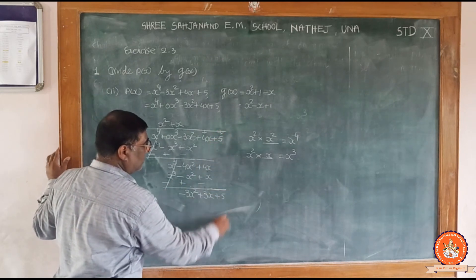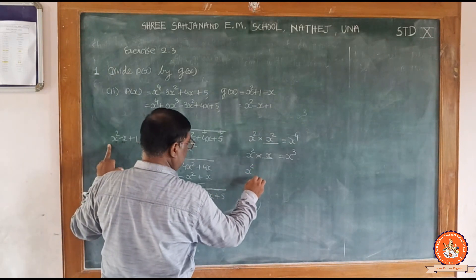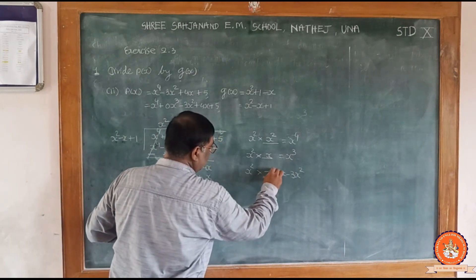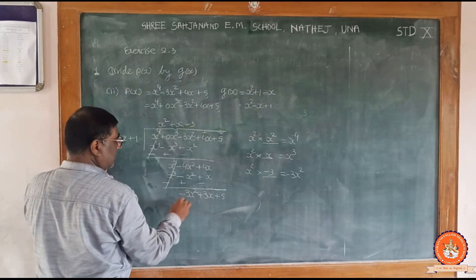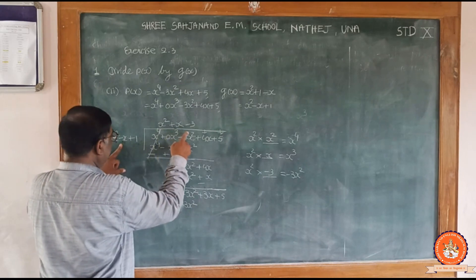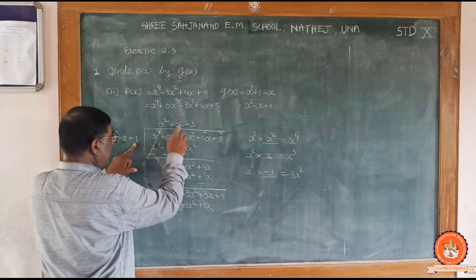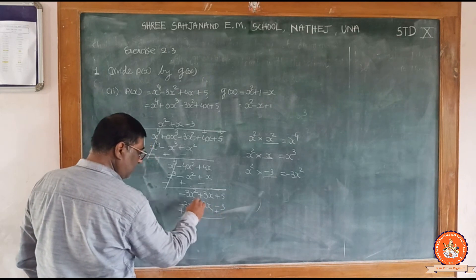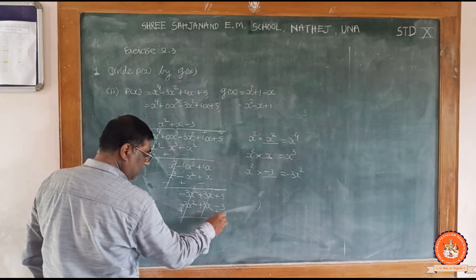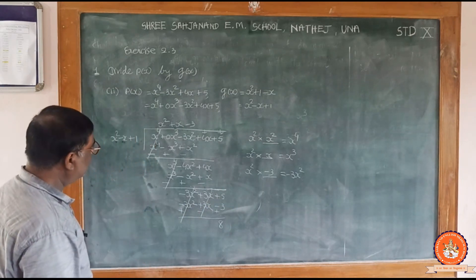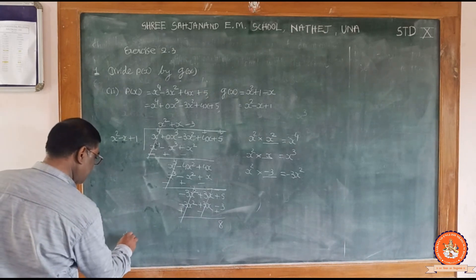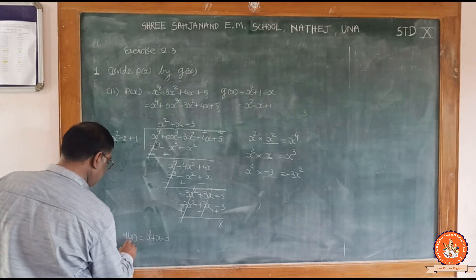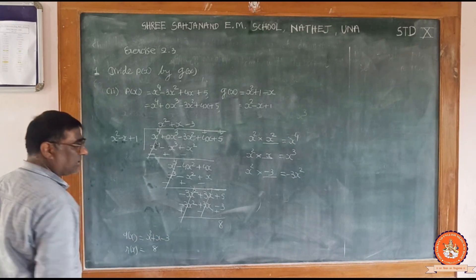Drop down plus 5. Now x square times minus 3 gives minus 3x square, minus x times minus 3 gives plus 3x, and 1 times minus 3 gives minus 3. Change signs: the x square terms cancel, the x terms cancel, and 5 plus 3 gives 8. So the quotient Q(x) equals x square plus x minus 3 and the remainder R(x) equals 8.